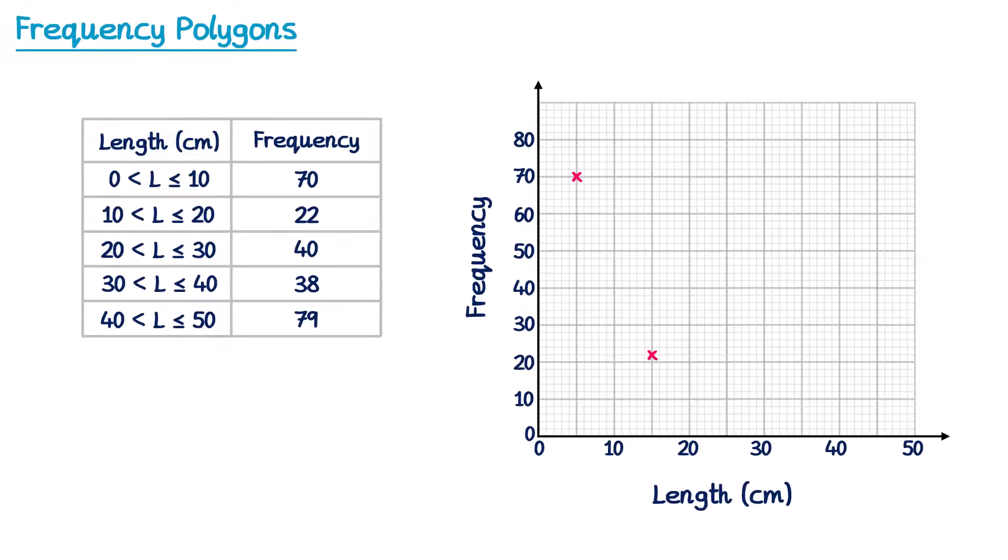For the next group we're doing 20 to 30 with a frequency of 40. The midpoint is 25, so at 25 we plot 40. For the next one from 30 to 40, the midpoint is 35, with a frequency of 38. And for the final group from 40 to 50, the midpoint is 45, with a frequency of 79.